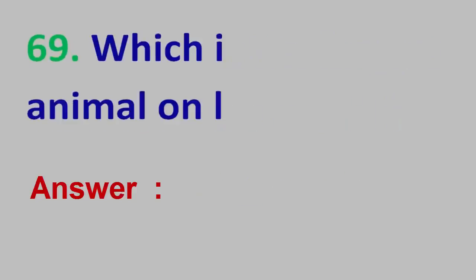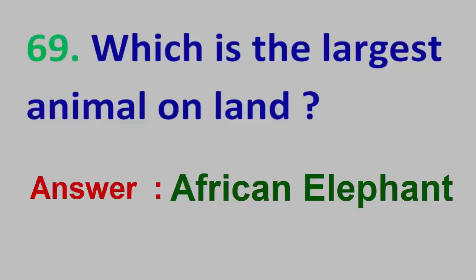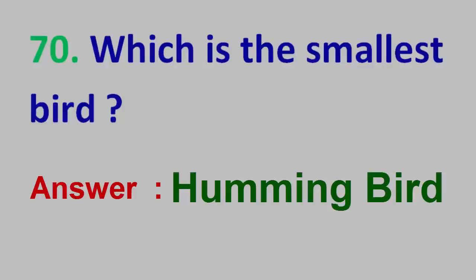Question No. 69: Which is the largest animal on land? Answer: African Elephant. Question No. 70: Which is the smallest bird? Answer: Hummingbird.